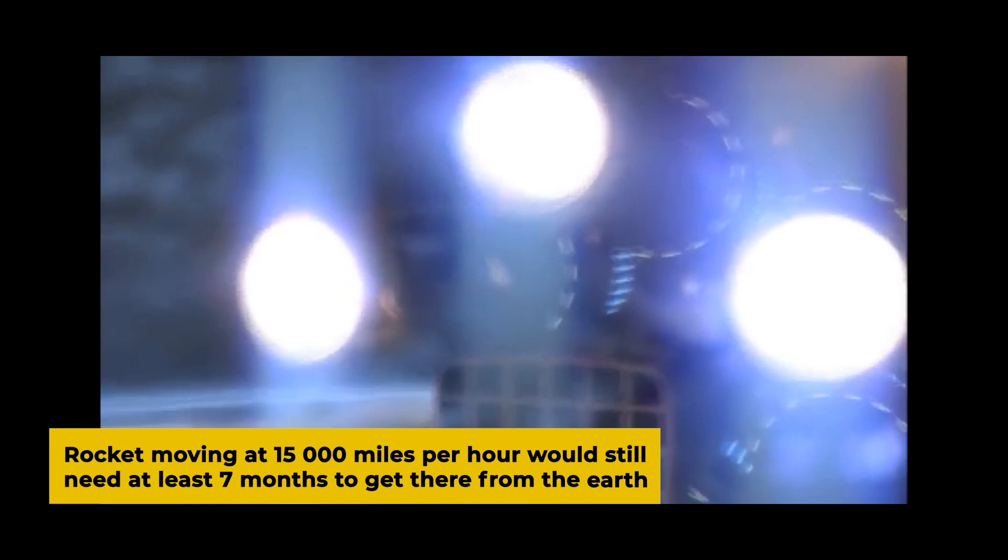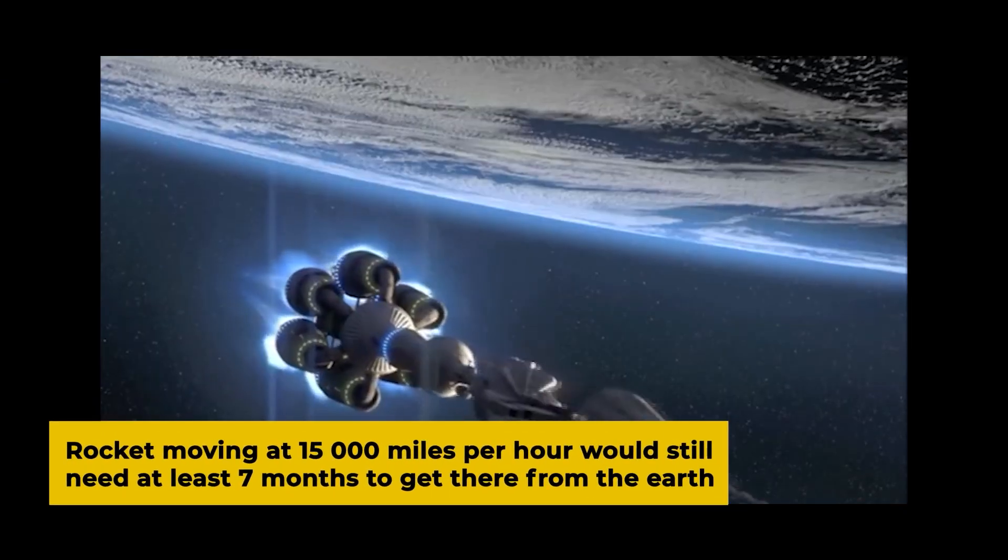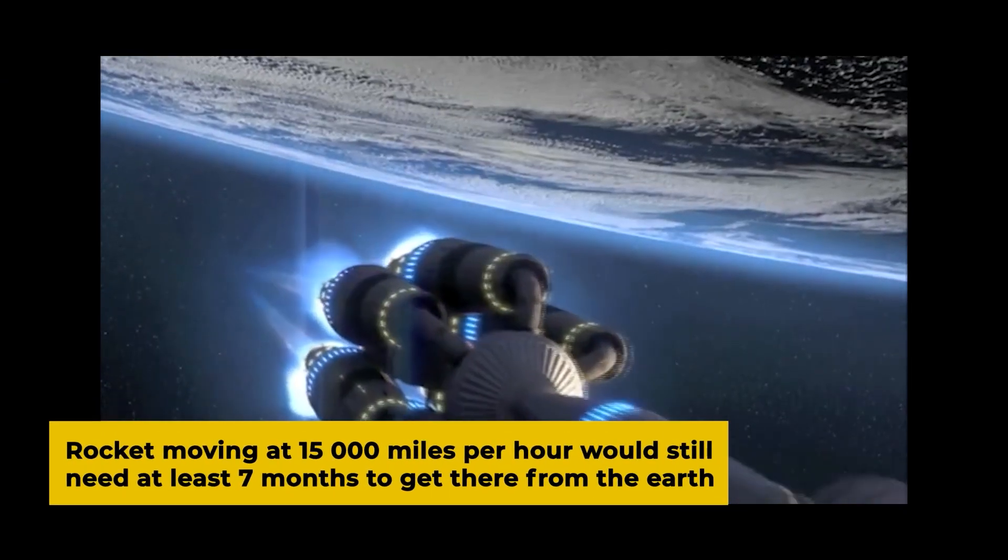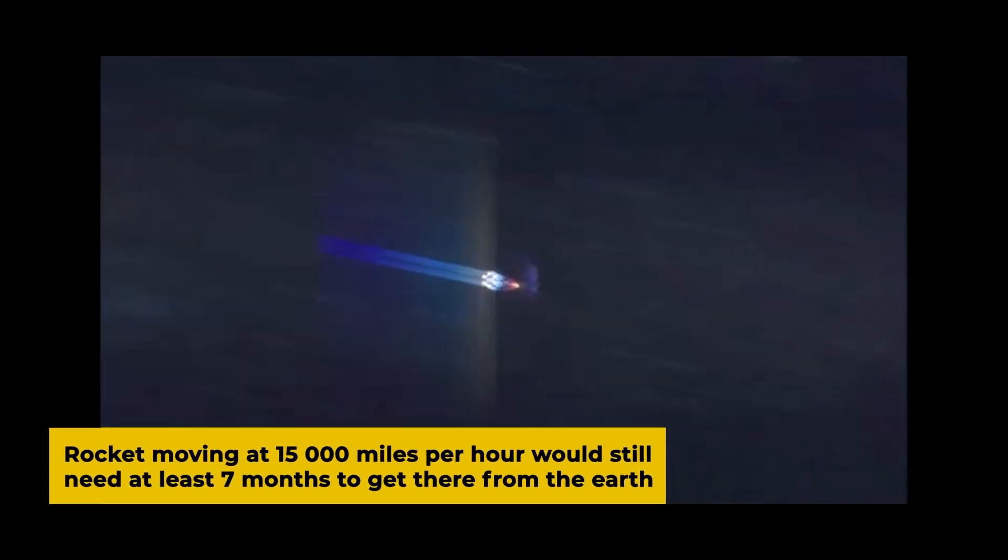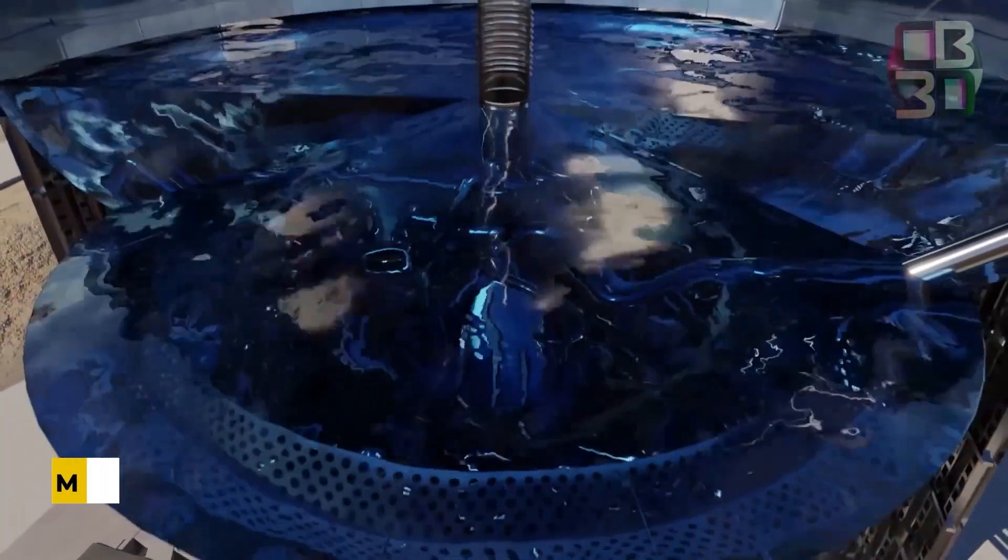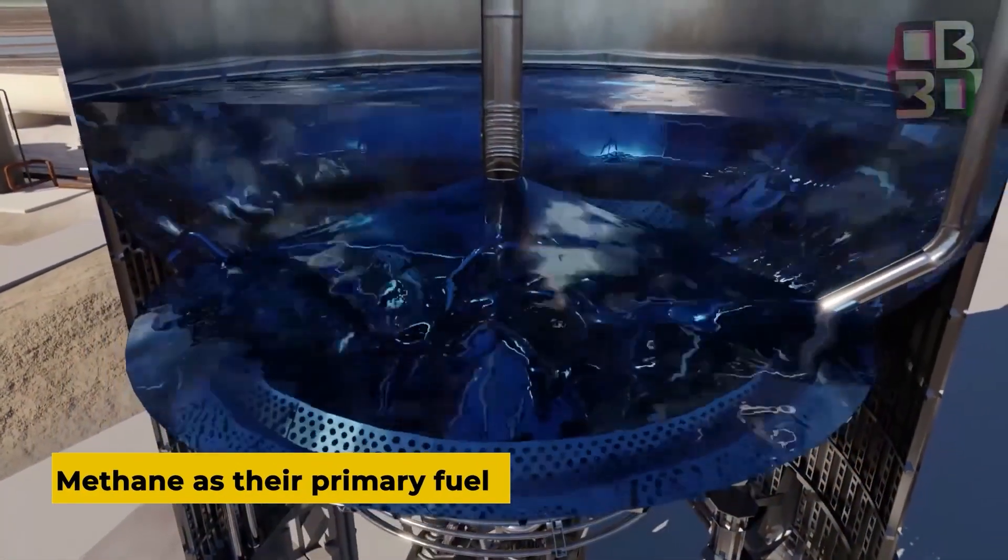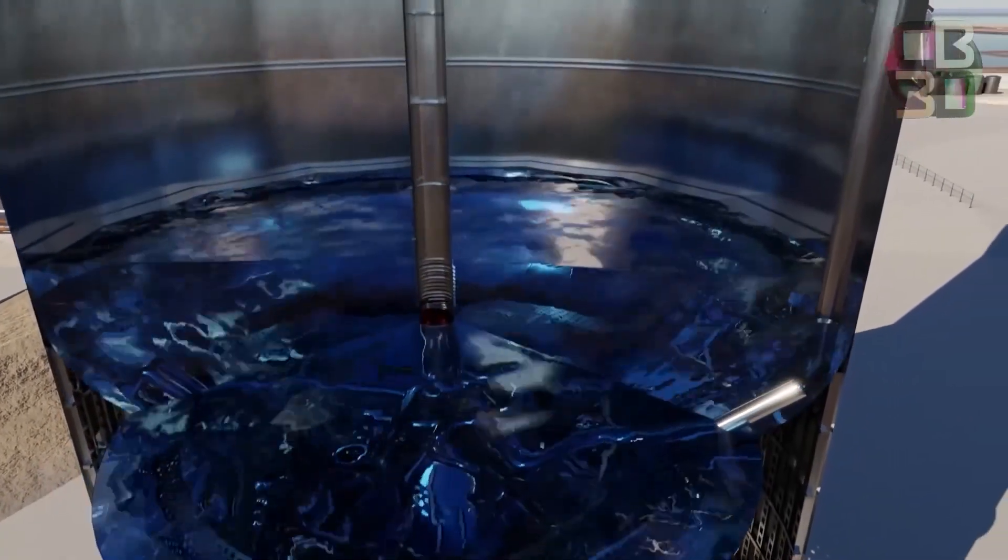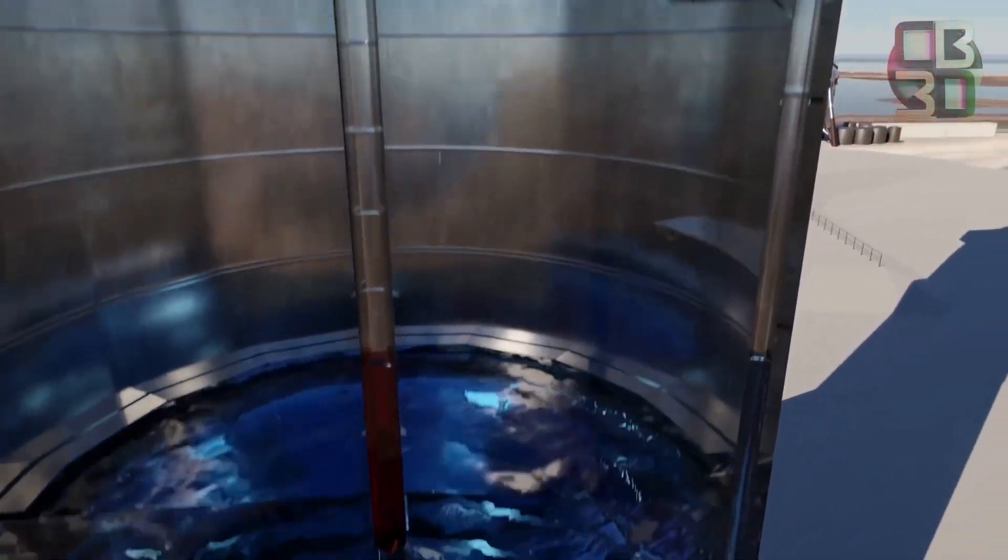A rocket moving at an incredible speed of 15,000 miles per hour would still need at least seven months to get there from the Earth. Modern rockets use methane as their primary fuel. This is in place of kerosene that was in use for rockets before.